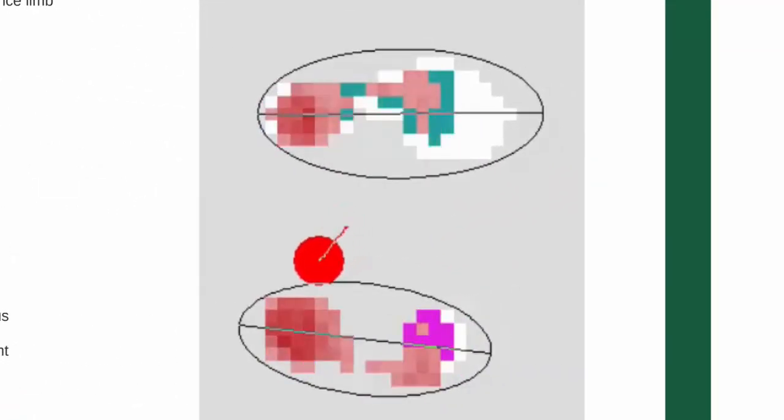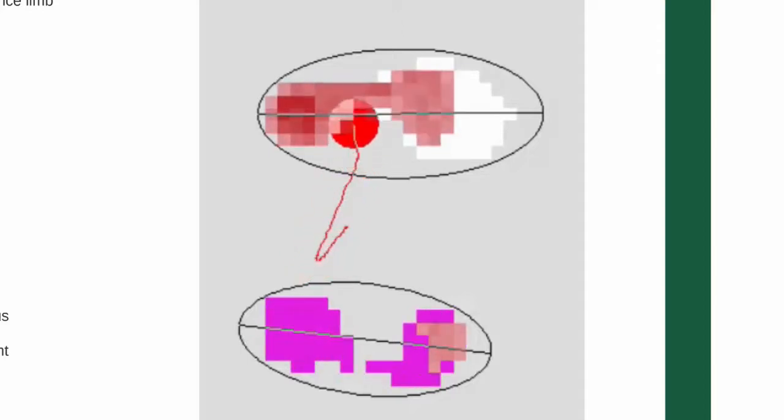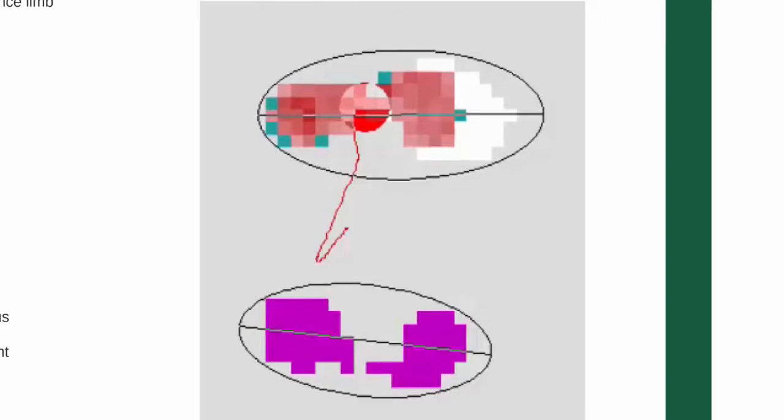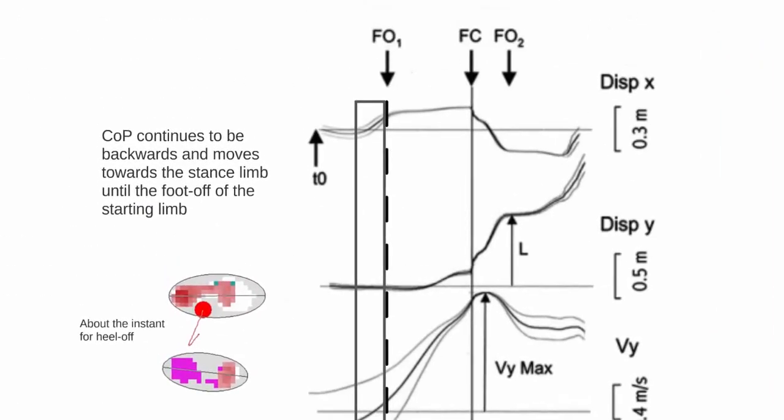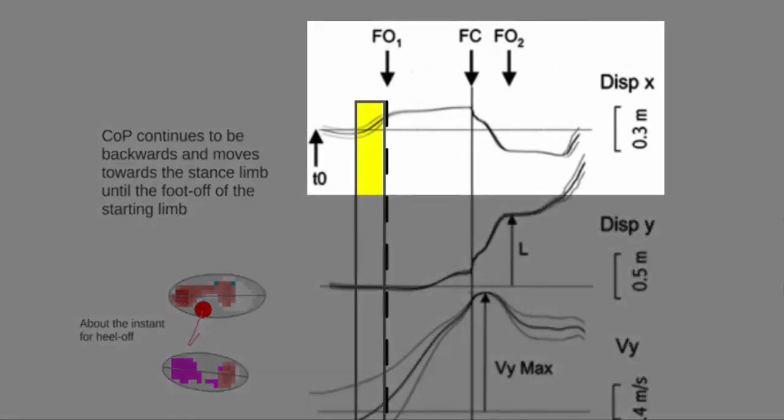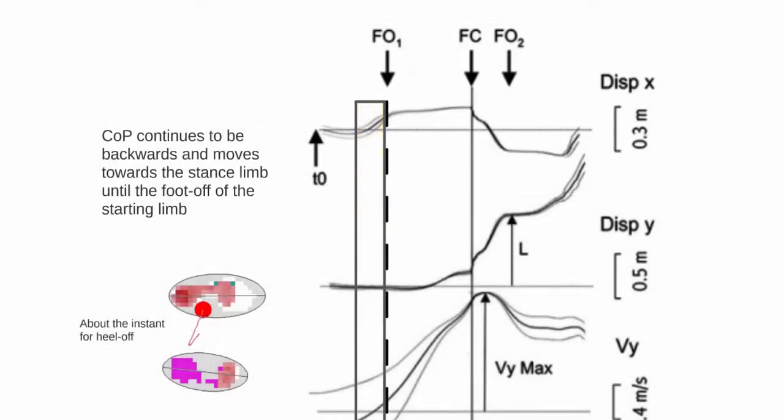After this drop of center of pressure to the starting foot, it continues its course in the rear to the support foot and anticipatory postural adjustments are terminated by lifting the swinging foot. Transfer to the support limb is visible here on this graph, representing the medial lateral position of the center of pressure. You notice that the instant of heel off, represented here by a red point, often coincides with a slight offset of the center of pressure.